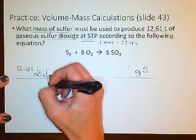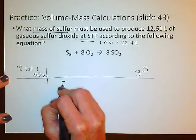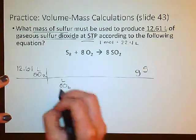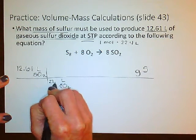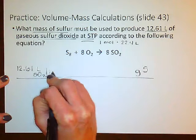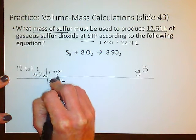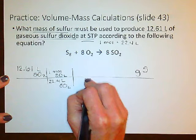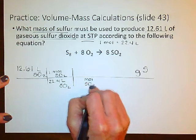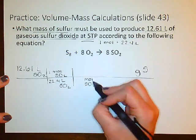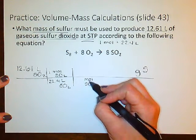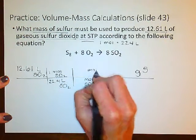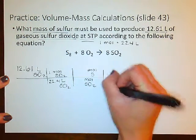We need to drop down liters of SO₂, and since we know that 1 mole of any of these substances equals 22.4 liters, we start right there with 1 mole of SO₂. The next step is to drop down moles of SO₂. We're trying to get to grams of sulfur, but we cannot go directly from moles of SO₂ to grams of sulfur, which means we need to transition to moles of sulfur.